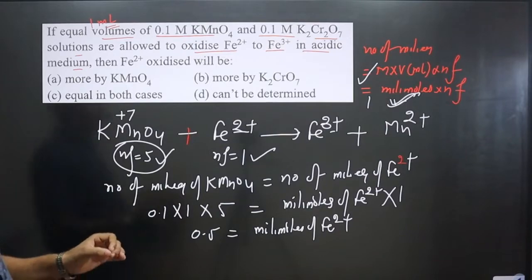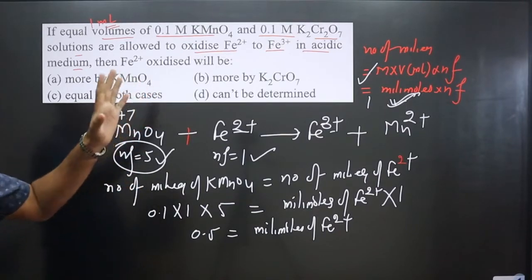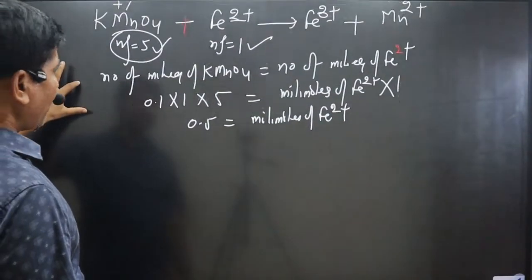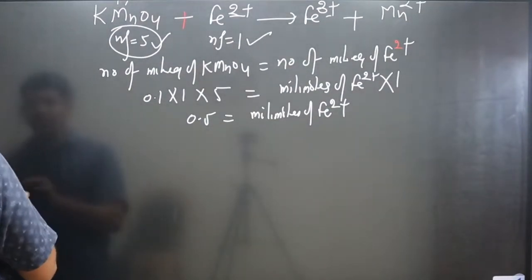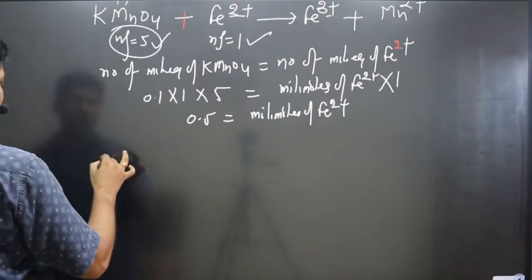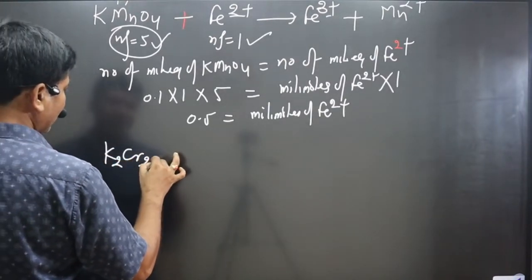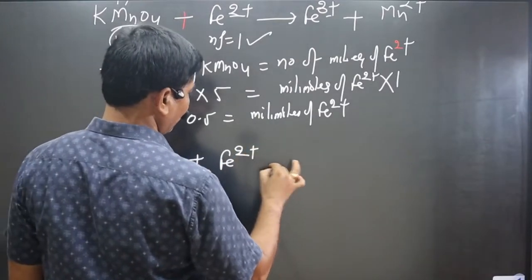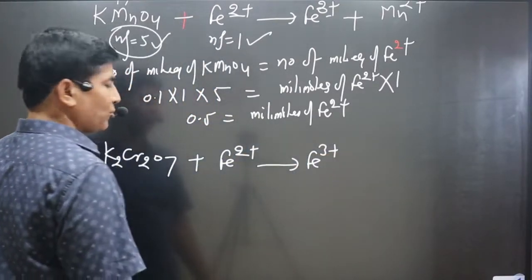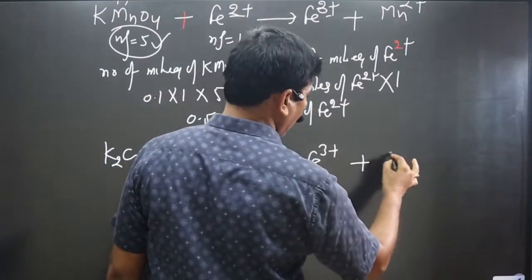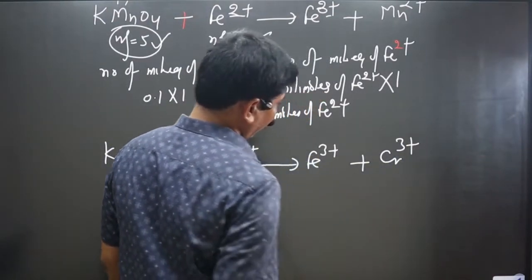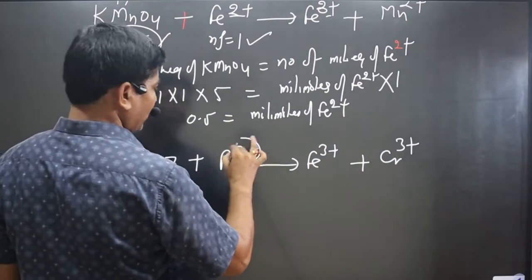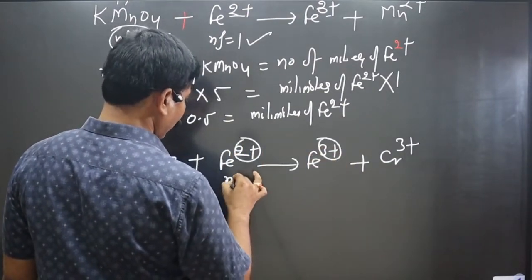Similarly, we write the reaction for K₂Cr₂O₇. This reaction also takes place in acidic medium, converting Fe²⁺ into Fe³⁺. Keep in mind K₂Cr₂O₇ always converts into Cr³⁺ in the chemical reaction. Now we calculate the n-factor value for K₂Cr₂O₇.